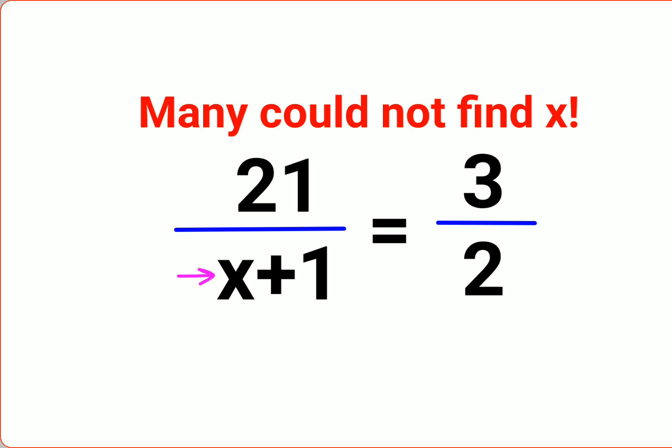Please understand, whenever you have two fractions on either side of an equal sign, the best way to convert it into a one-line equation is by cross multiplying. This means you multiply 21 with 2 and multiply 3 with (x + 1).